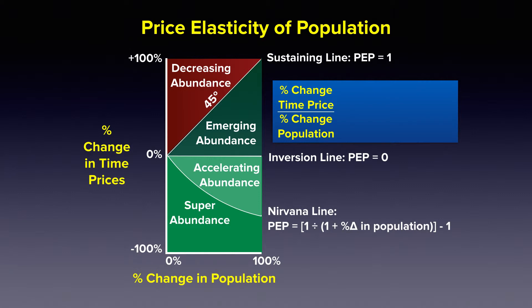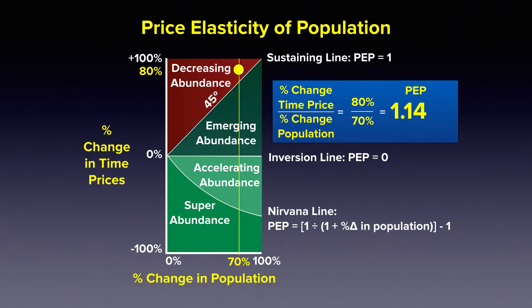Let's look at an example. Assume that population has increased by 70%, and we will look at different changes in time prices. With our equation, we plug 70% into the denominator. If prices are increasing at 80%, that equation gives us a PEP coefficient of 1.14. If prices are increasing at exactly 70%, our PEP equation yields a coefficient of 1.0.